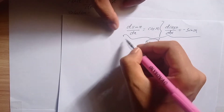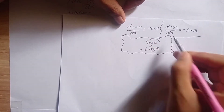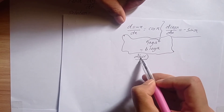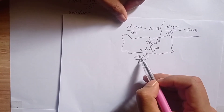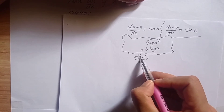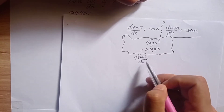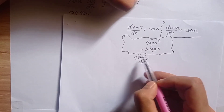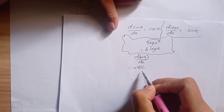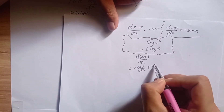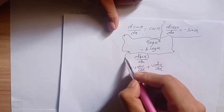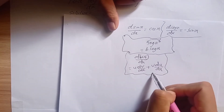Also the product rule: if u and v are both functions of x, the derivative of u times v with respect to x is u times dv/dx plus v times du/dx.